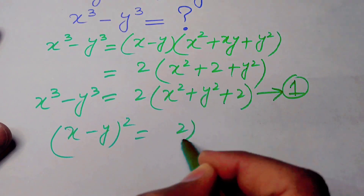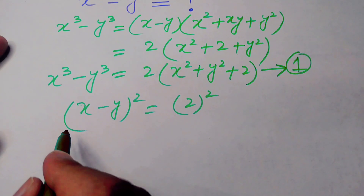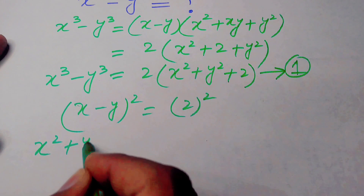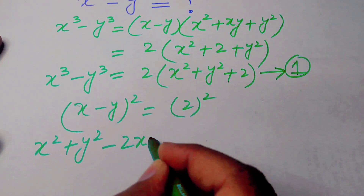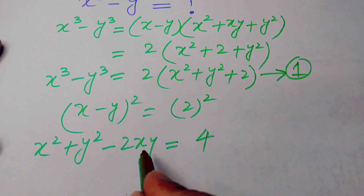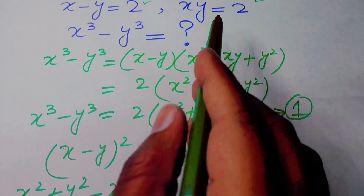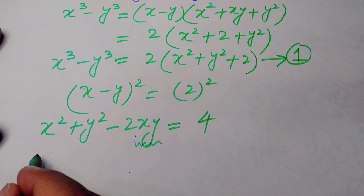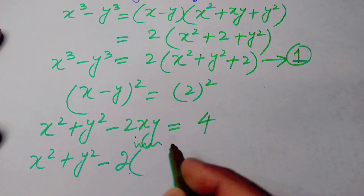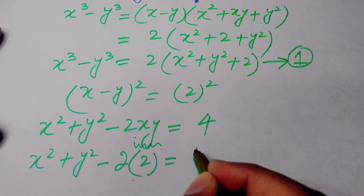We obtain x minus y squared equals 2 squared. Expanding the identity, x squared plus y squared minus 2xy equals 4. We substitute the value of xy which is 2, so x squared plus y squared minus 2 times 2 equals 4, giving x squared plus y squared minus 4 equals 4.